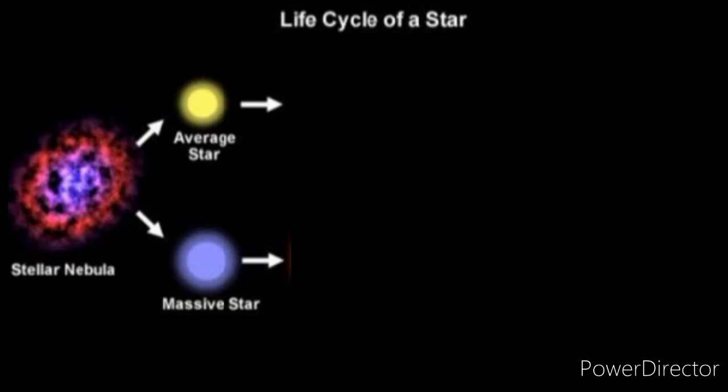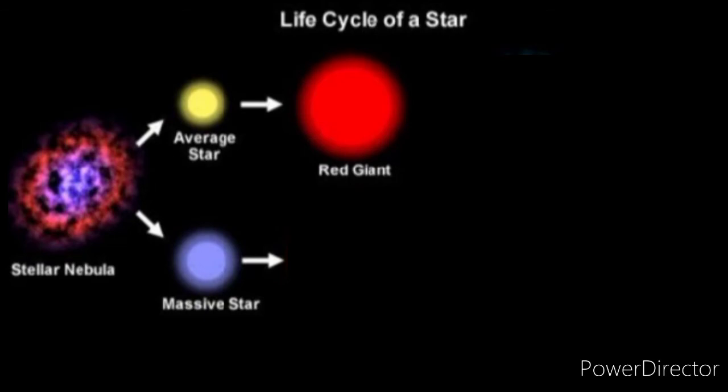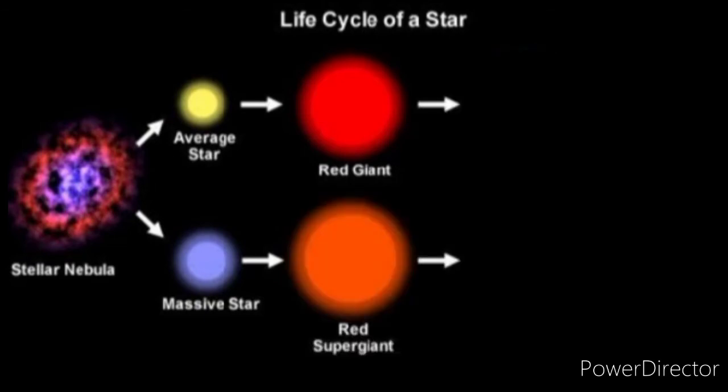However, both types will eventually begin to run out of the hydrogen fuel that powers the nuclear reactions in the core of a star, and they will enter their final phases. As time passes, they expand, cool down, and change color — average stars will become red giants and massive stars will become red supergiants.